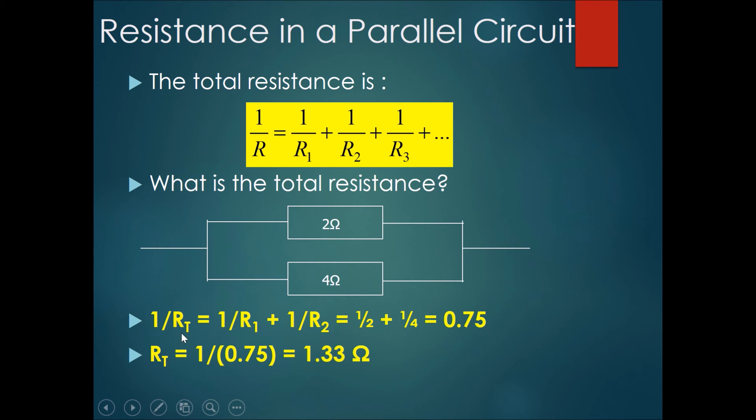So R total would be equals to 1 divided by 0.75, and the total resistance of these two equals 1.33 ohms.